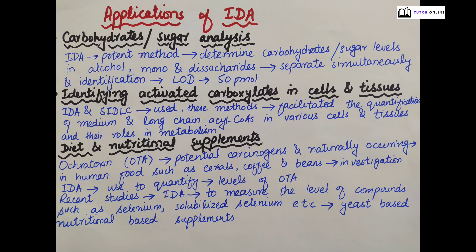Regarding light and nutritional supplements: Ochratoxin OTA is a potential carcinogen and the natural occurrence of OTA in human foods such as cereals, coffee, and beans has been extensively investigated. IDA is used to quantify the levels of OTA. Recent studies have also used IDA to measure the levels of compounds such as selenium and solubilized selenium in yeast-based and nutritional-based supplements.